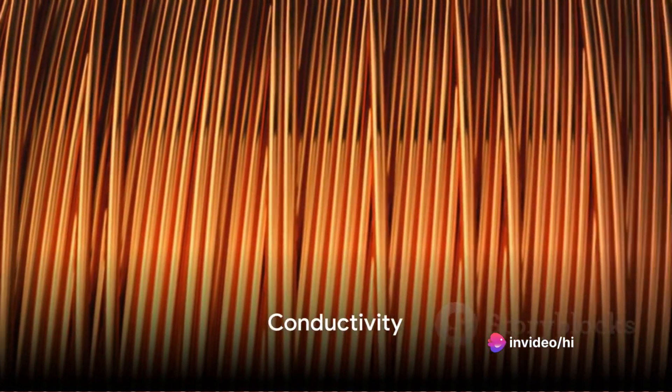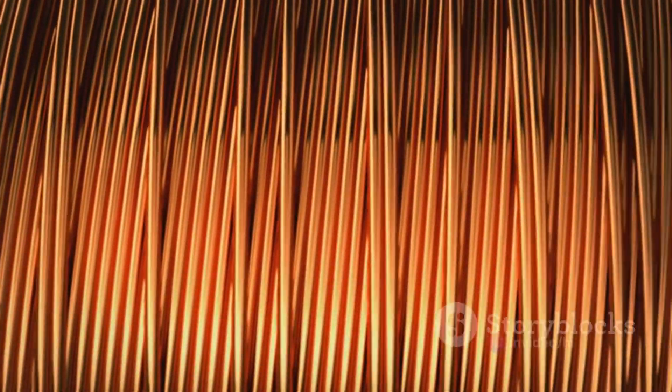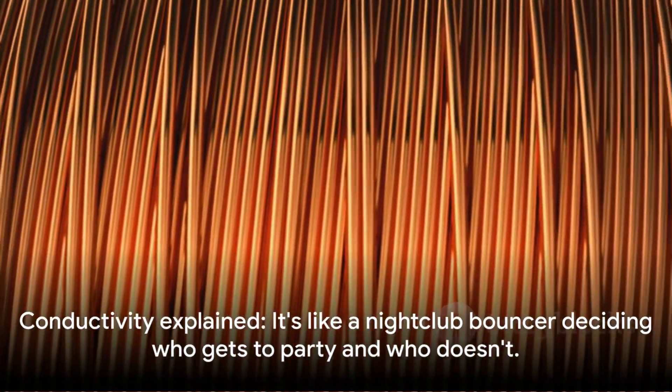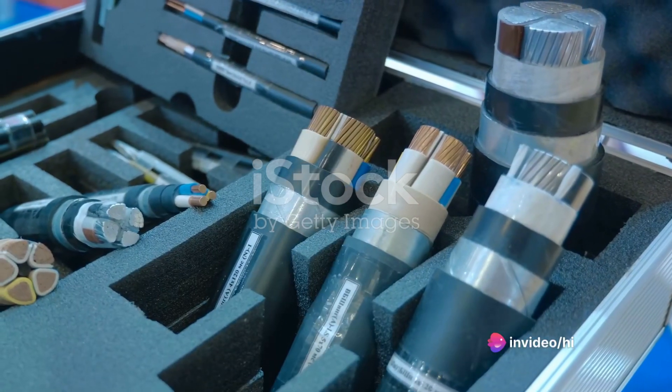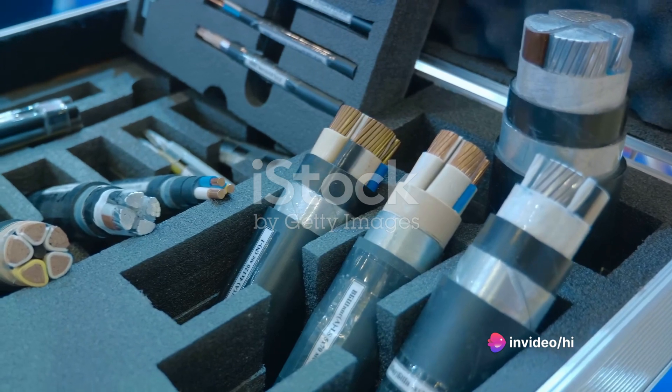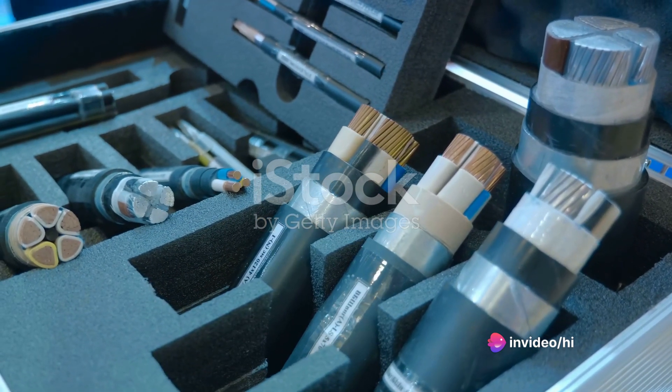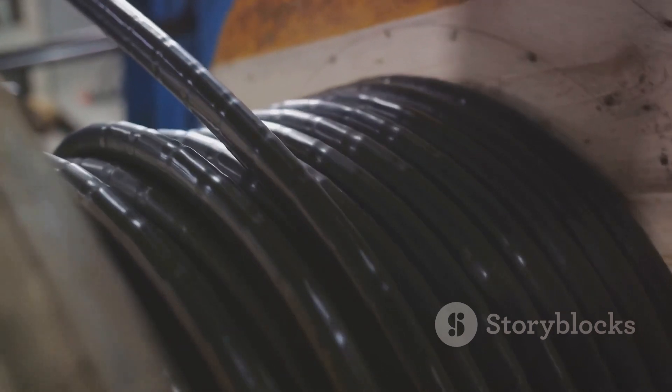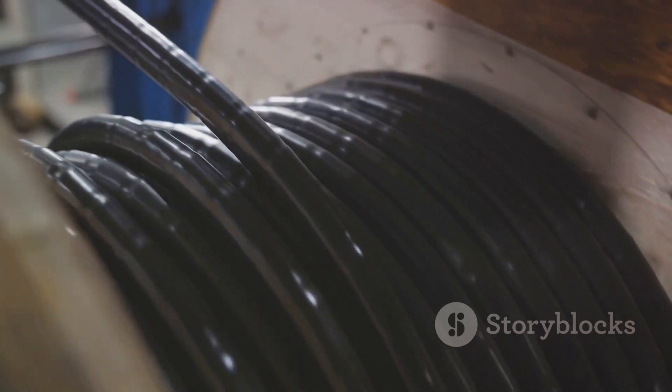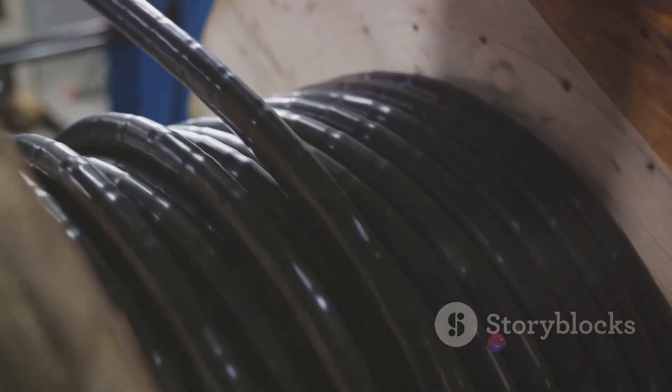Our first stop is conductivity. Think of it as a material's willingness to let an electric current pass through it. It's like a nightclub bouncer deciding who gets to party and who doesn't. Metals, being the life of the party, have high conductivity. They allow electric current to flow through them readily. On the other hand, insulators like rubber are the strict bouncers, allowing very little current to pass through.